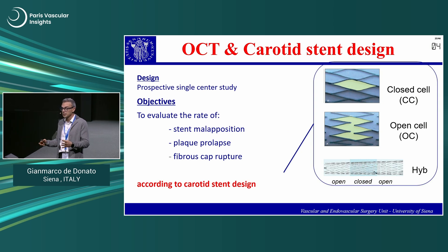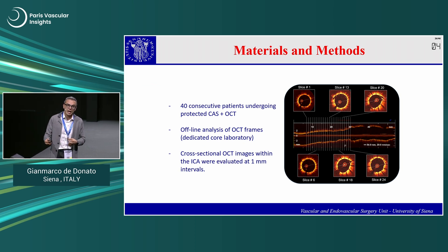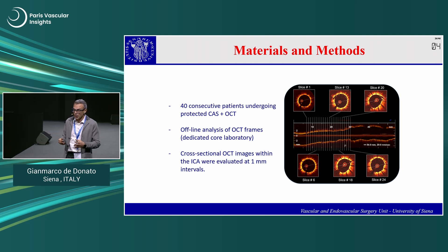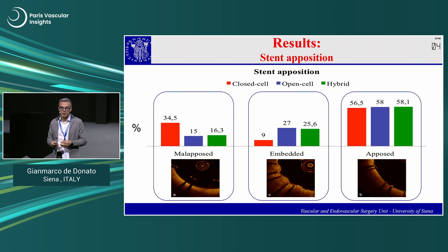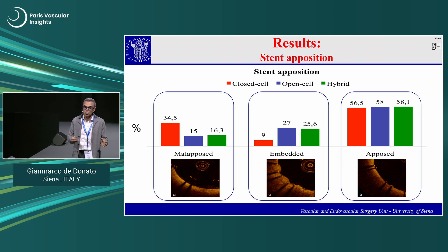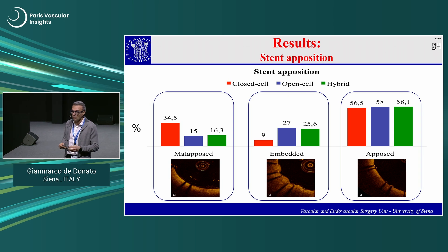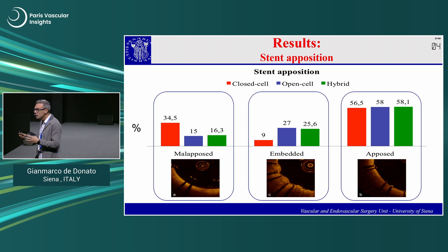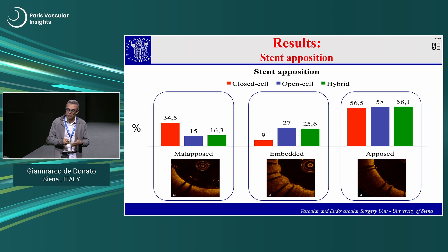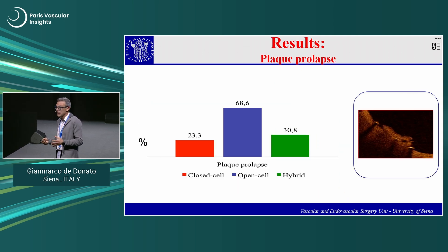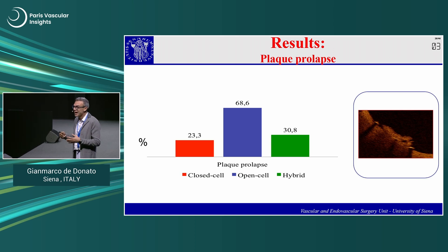We analyzed closed cell, open cell, and hybrid stents with offline analysis of all OCT frames every one millimeter. Closed-cell stents showed more malposition. Open-cell stents, being more conformable, had struts embedded inside the plaque. Plaque prolapse was very frequent — up to 68% of frames with open-cell stents, slightly better with closed-cell and hybrid designs.